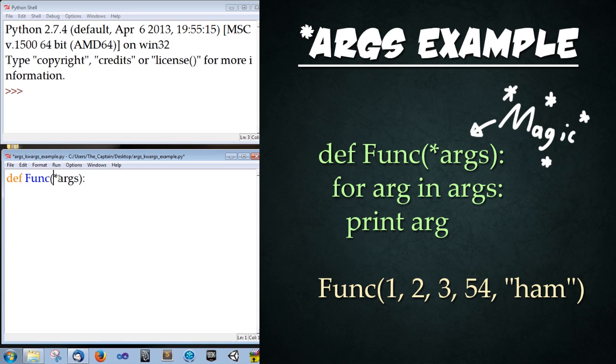What this is doing is *args is saying hey, for however many regular arguments we take in, this is going to catch them all. After that we're just going to create a simple for loop: for arg in args: print arg. That's it.